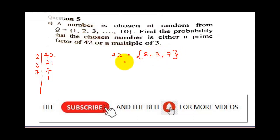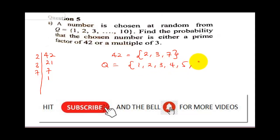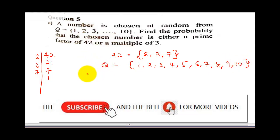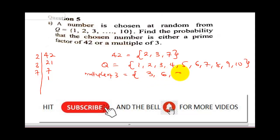So these are the prime factors of 42. Now, our Q is equal to 1, 2, 3, 4, 5, 6, 7, 8, 9, and 10. The multiples of 3 between 1 to 10 are 3, 6, and 9.